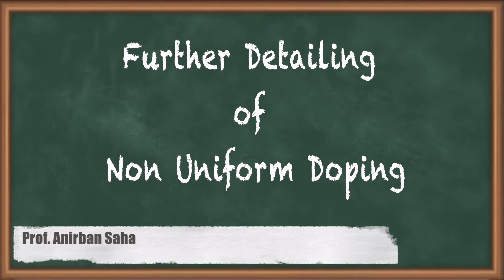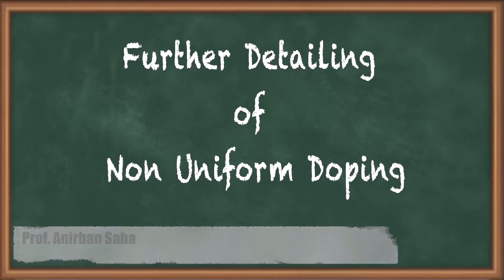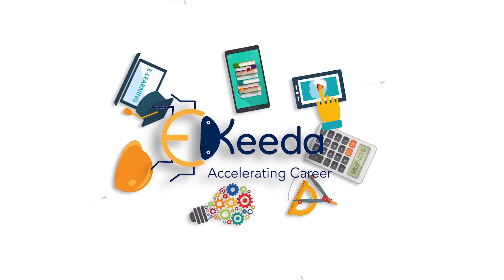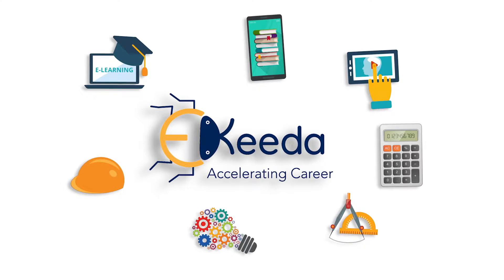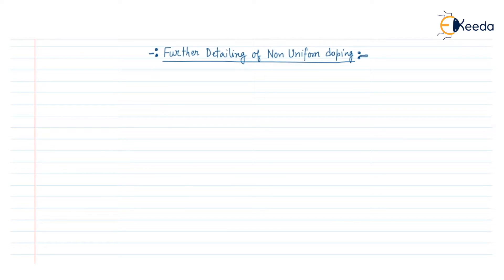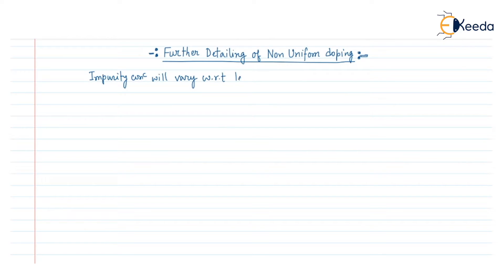Hello friends. In this video we are going to discuss further detailing of the non-uniform doping in the semiconductor material. In non-uniform doping we have already discussed that the impurity concentration will be varying with respect to the length of the semiconductor.